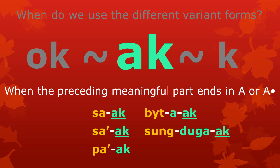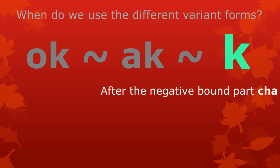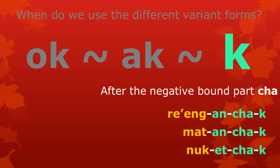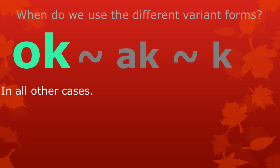Remember from the previous video that in cases where two of the same vowels meet, three different pronunciations are possible, but the spelling of the word follows the analysis of its meaningful parts. The variant form K of the change of state Pansok is used after the negative Sok Cha — for example, in the words Reinganchak, Matanchak, and Nuketchak.